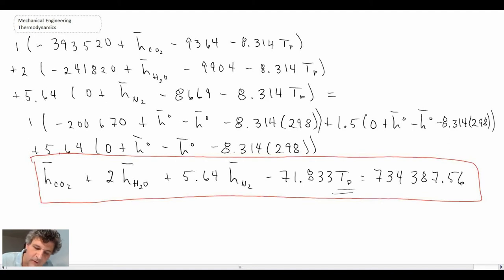Now, we don't know the adiabatic flame temperature, which is the temperature of the product, and if we knew it, we could then go into the tables and get the value of the enthalpy here, the enthalpy there, and the enthalpy there, but we don't know that.